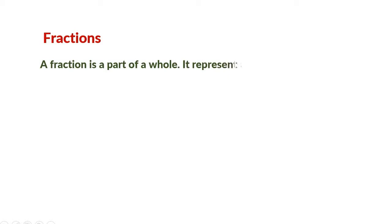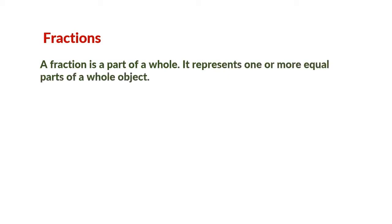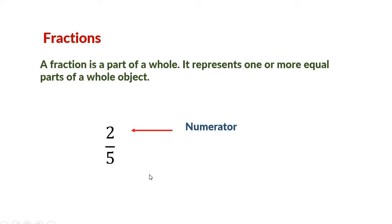A fraction is a part of a whole. It represents one or more equal parts of a whole object. Here, 2 is written above a small bar and 5 is written under the small bar. We can say this 2 is the numerator, and the small bar is called the fraction bar or division bar.